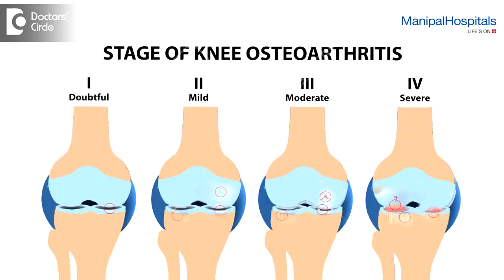There are different stages of Osteoarthritis. The first stage starts with softening of the cartilage, where the cartilage is not actually broken but becomes soft and is less capable of bearing load. This is sometimes also known as chondromalacia of the cartilage.